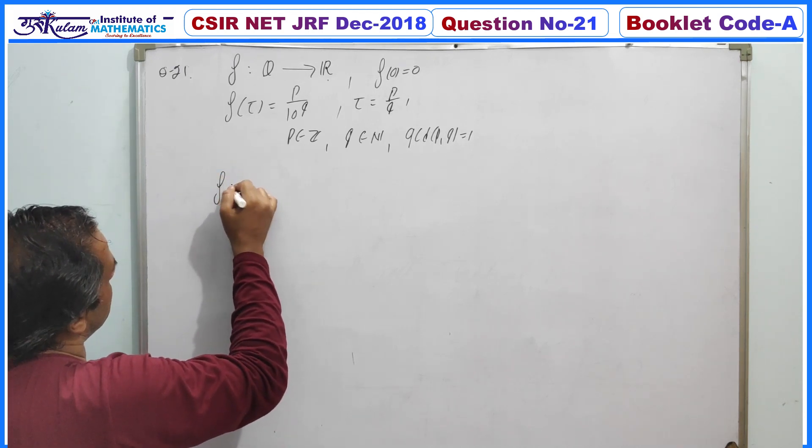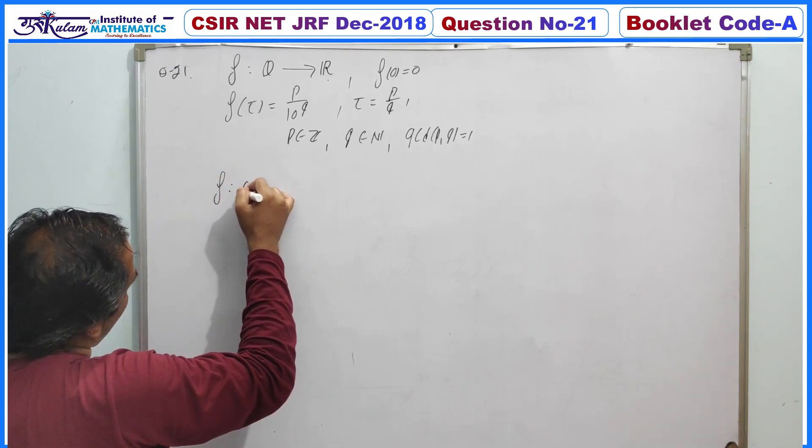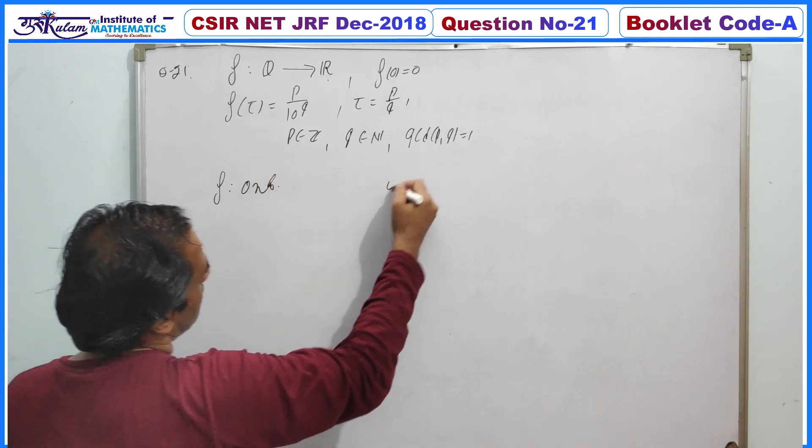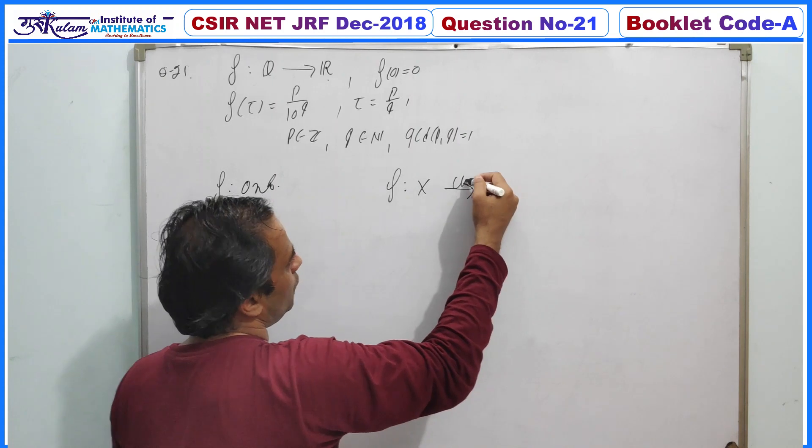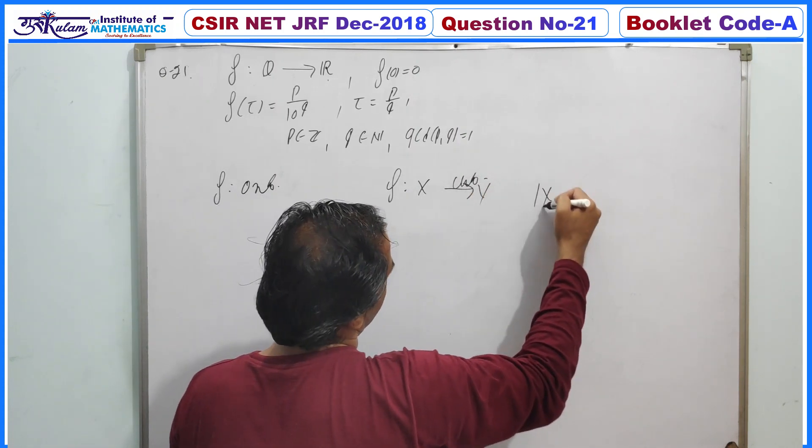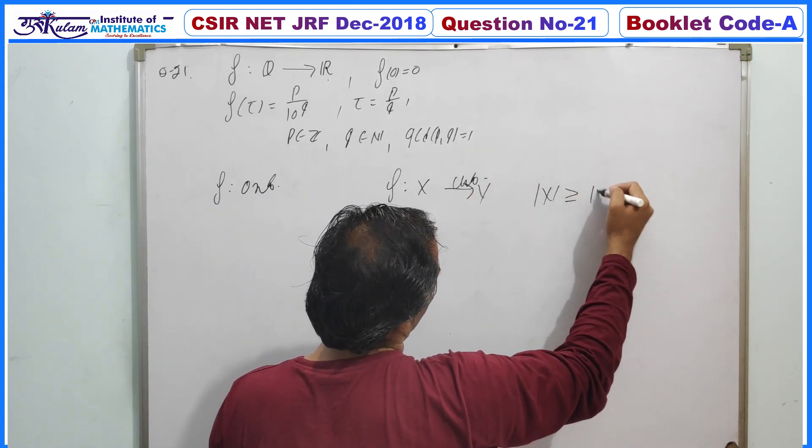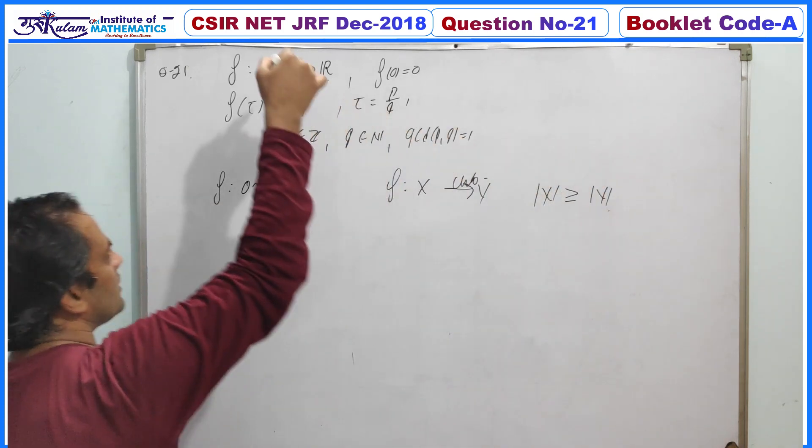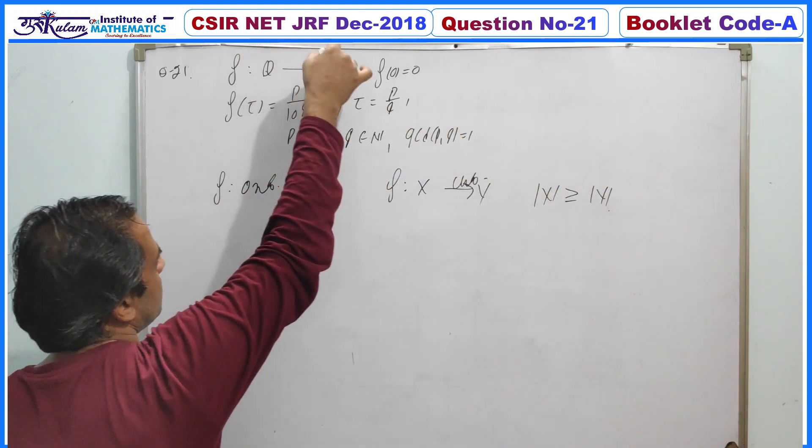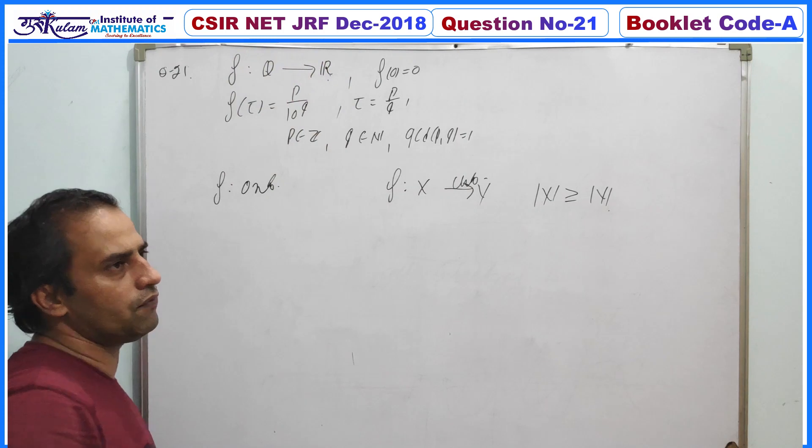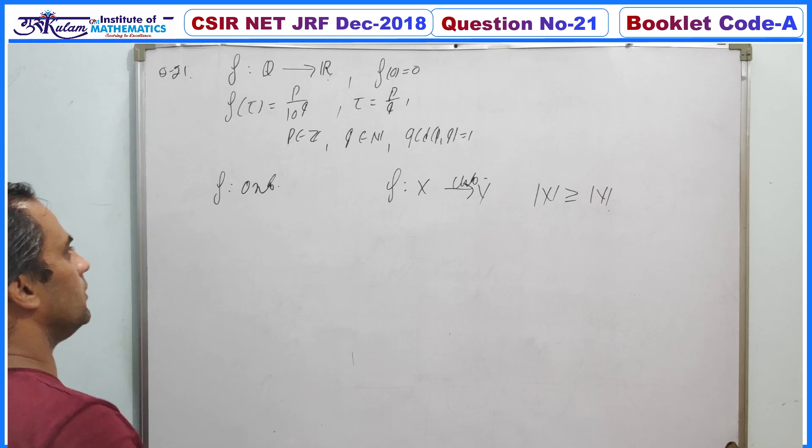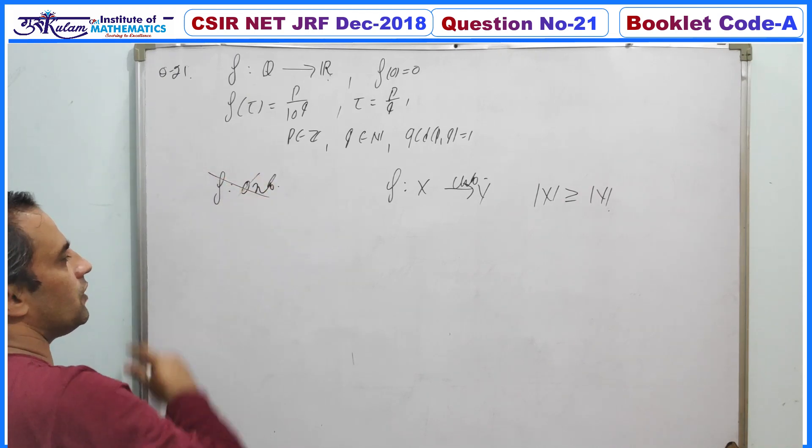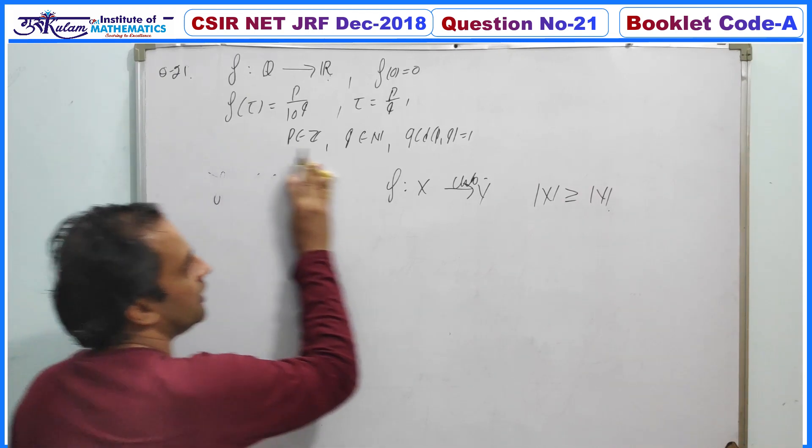Now if f is onto, we know that if f is a function from some X to Y which is onto, then the number of elements in X must be greater than or equal to the number of elements in Y. In this case, the number of elements in domain is less than the number of elements in codomain. Since domain is countable and codomain is uncountable, so definitely this f is never onto. Directly we can say that.